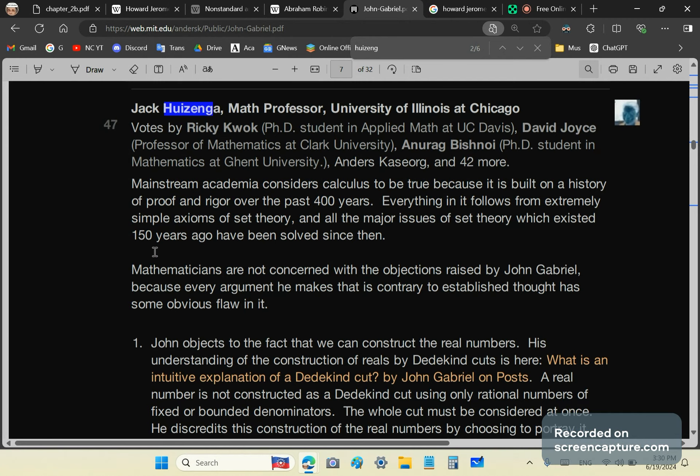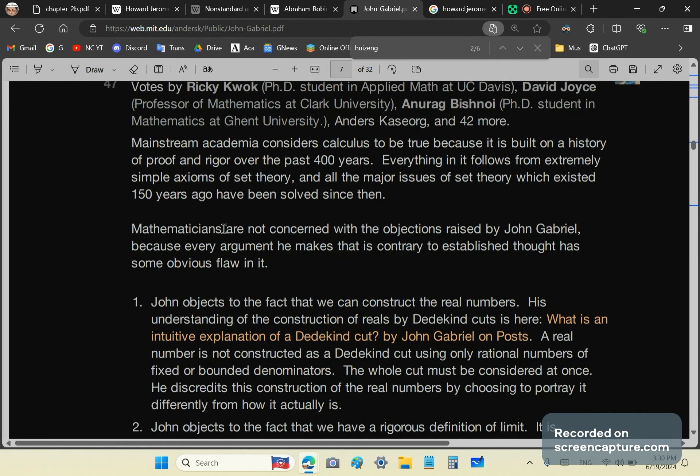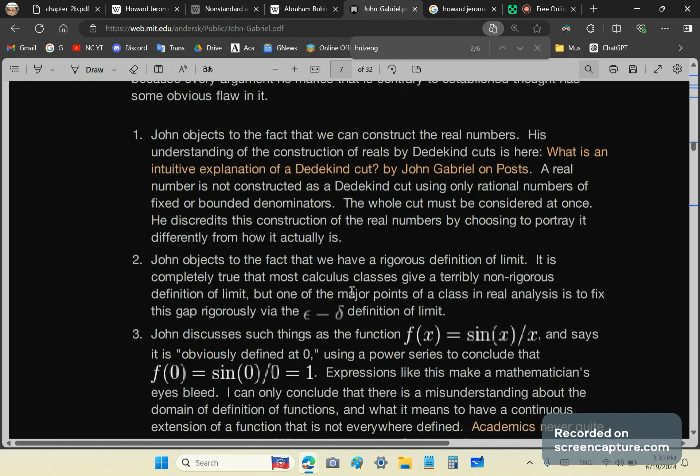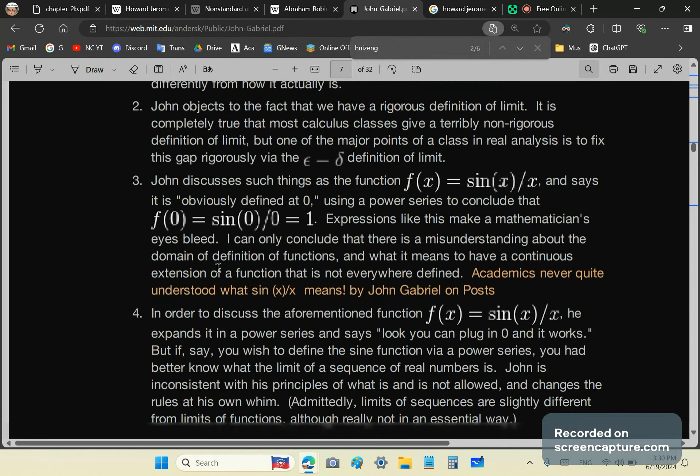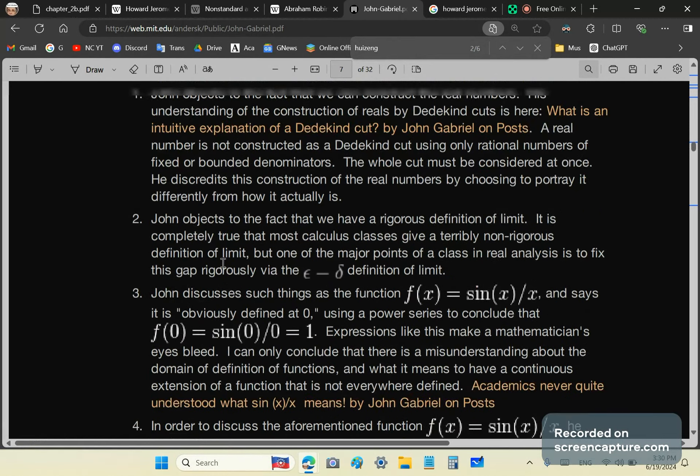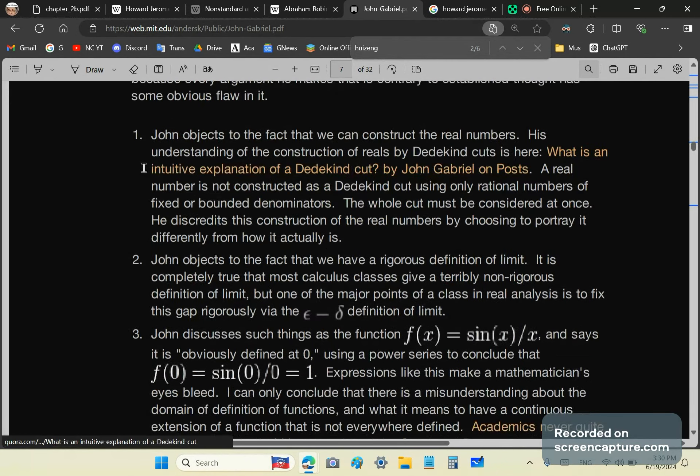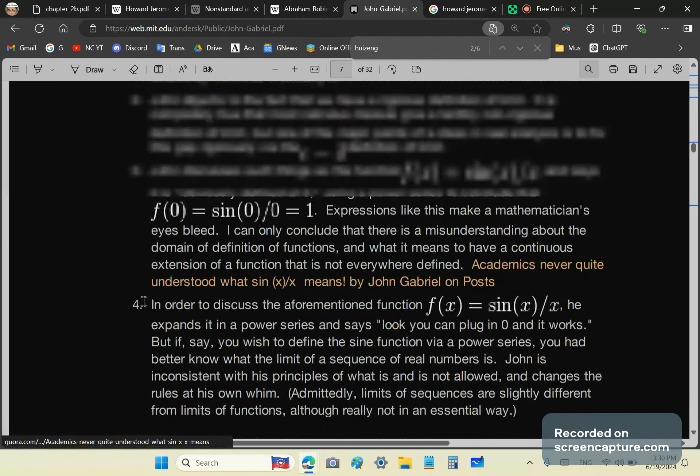So he says everything in it follows from extremely simple axioms of set theory. I mean, the guy's an idiot and this guy is a professor of mathematics who is an ex-Harvard alumnus. So he says, mathematicians, what he means are mainstream moron academics are not concerned with the objections. And then he goes into a diatribe here in which every one of his comments are wrong. And this cunt has been one of the main reasons that none of my work actually got published, by the way, because of the bullshit that he writes over here. And every one of those points that he makes one, two, three, and four are false.